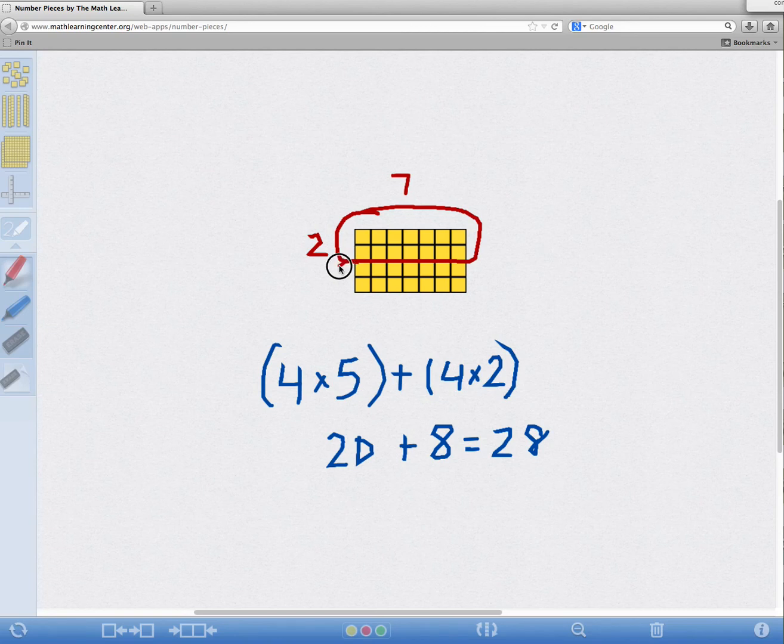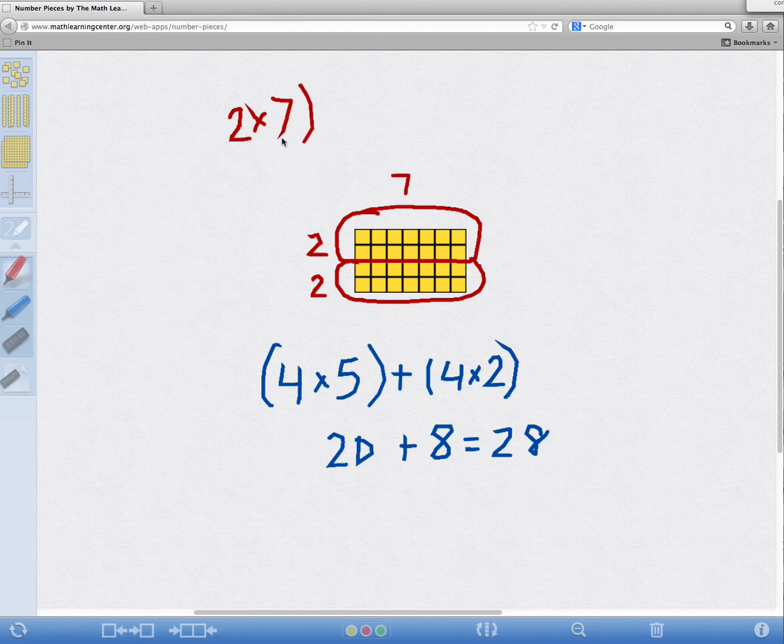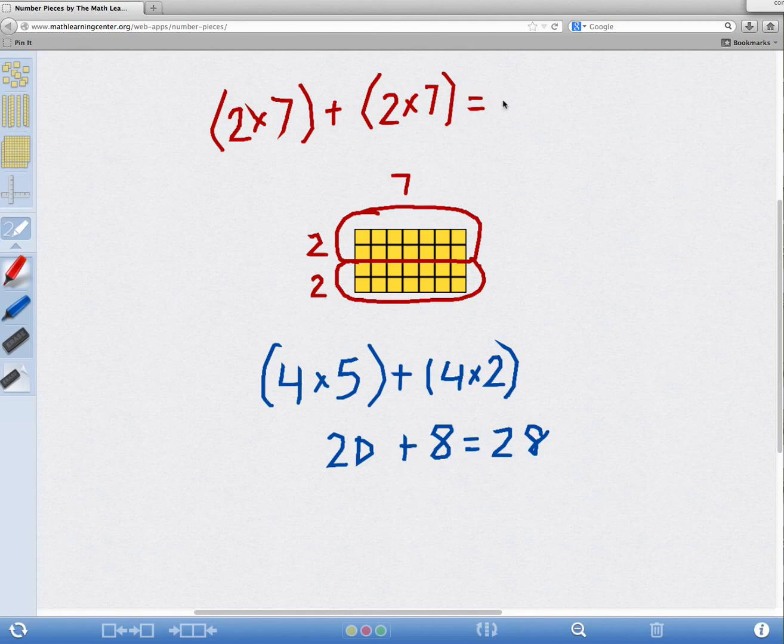You can see that. And then I can see that, well, here's another group of seven. Another two groups of seven. So I can see and understand that two times seven plus another two times seven gives me 28 because it's the same as saying 14 plus 14 equals 28.